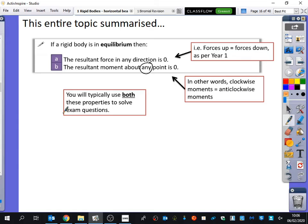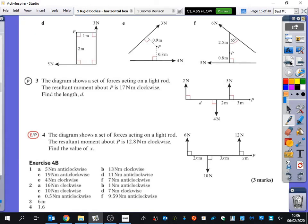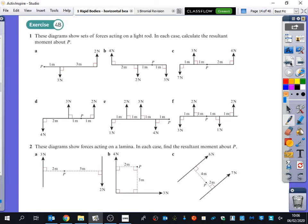You don't always need to use both, but you can always access both of these. Now, I've circled this word any, and I'm going to put a star here, and I'm going to put another star here, because it's so important. You can take moments about any point. What you have just done on this previous exercise is you have been taking moments about this point, about this point, about this point, because they weren't in equilibrium.